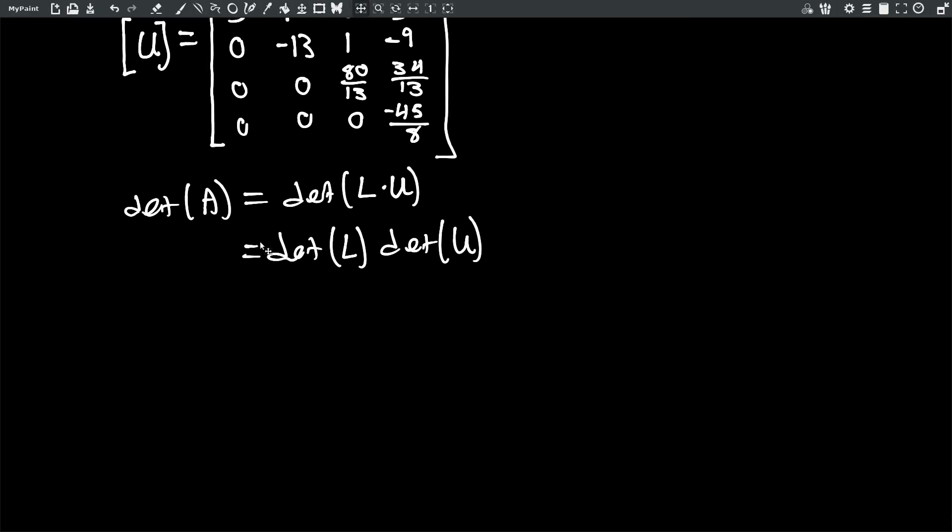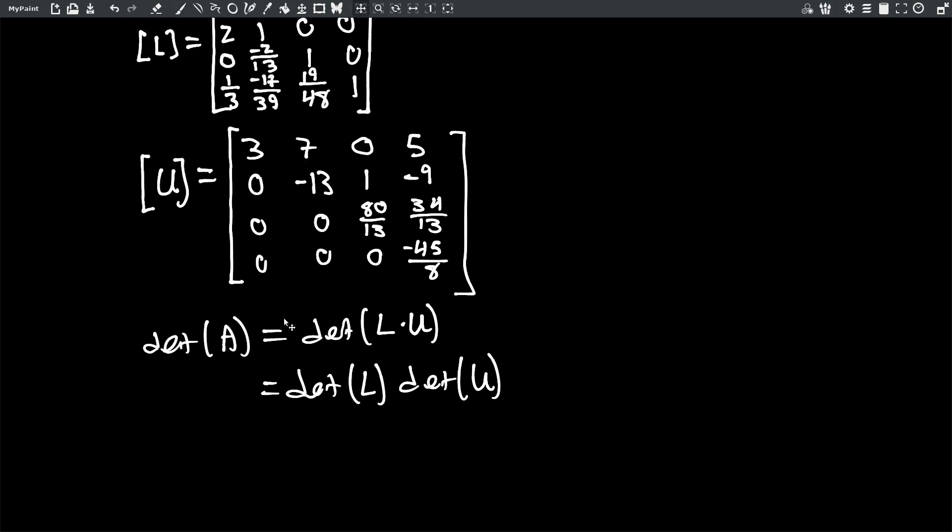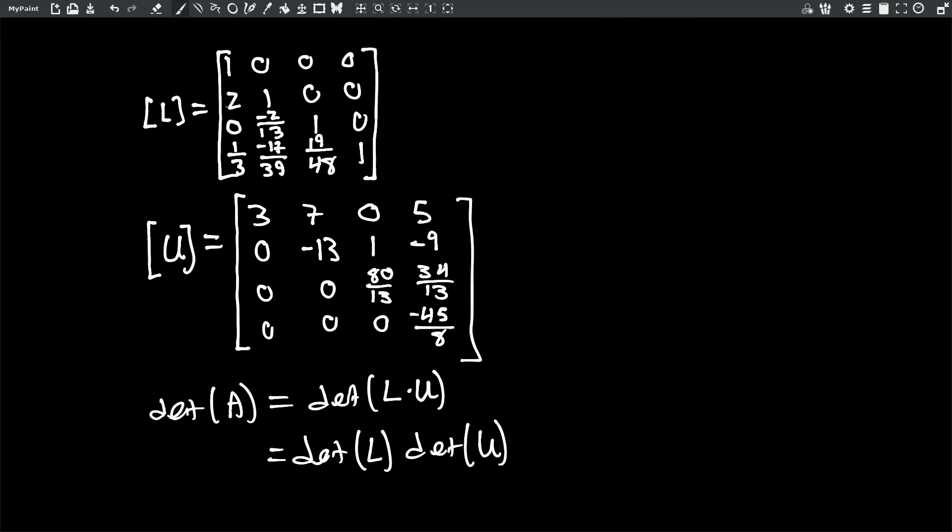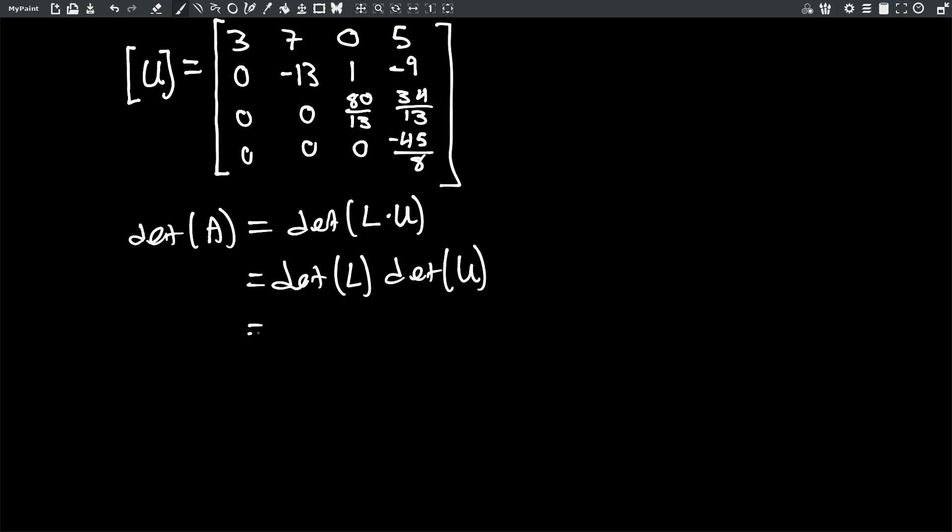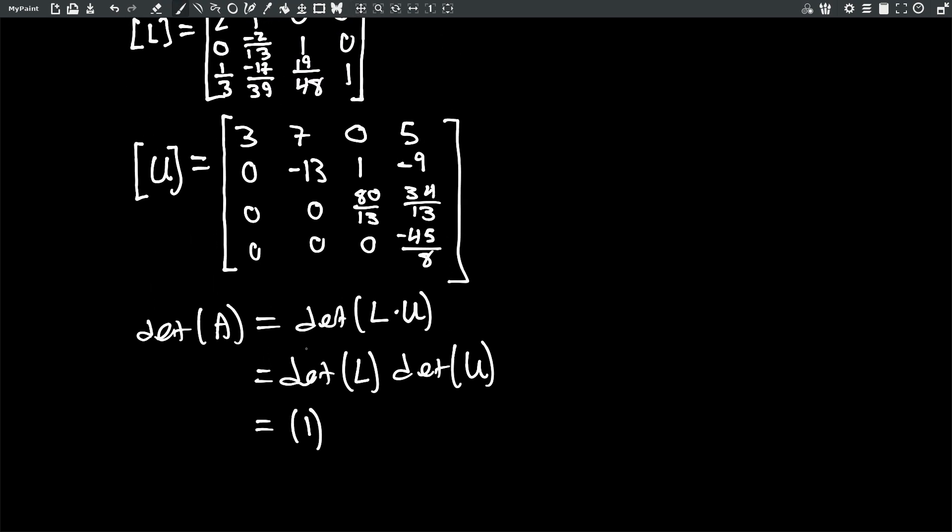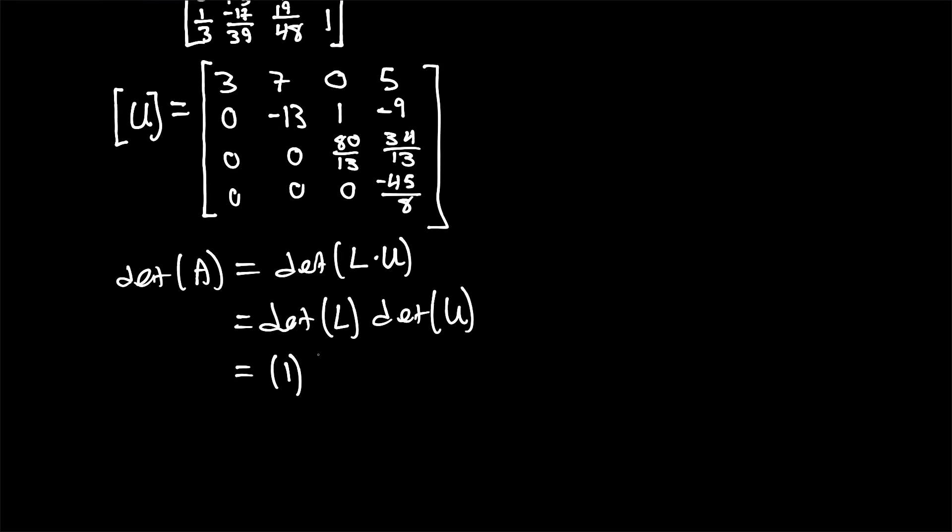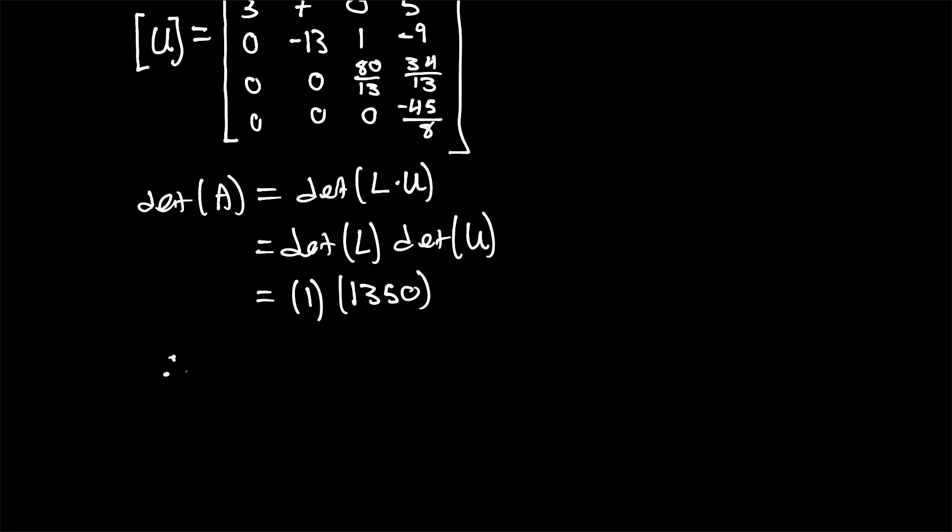And therefore, given these are both triangle matrices, the determinant of matrix L is easy to find out. It's just that diagonal there. Those are all 1s. For the upper matrix, it's a little bit more difficult, but you multiply the main diagonal and you will get 1,350. And that's a quick and easy way to get the determinant.